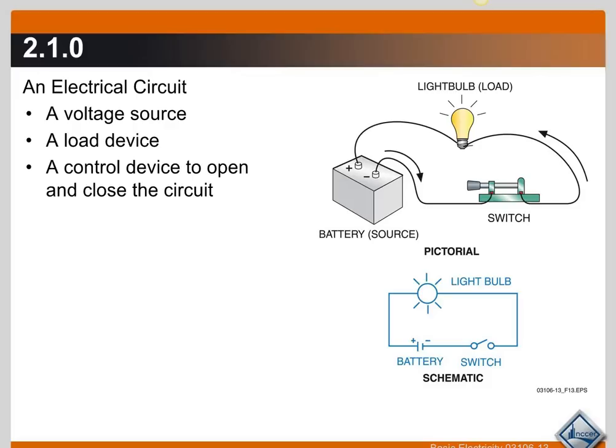In air conditioning we're going to have high pressure switches, low pressure switches, temperature controlled switches and so forth. So there may be more than one switch but there is at least one switch in every circuit to turn it on and off. And then there's wires to carry the power.